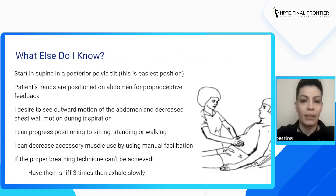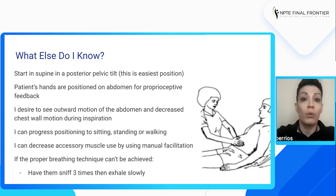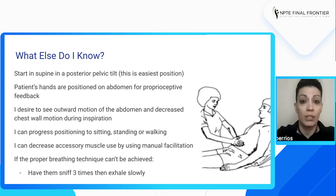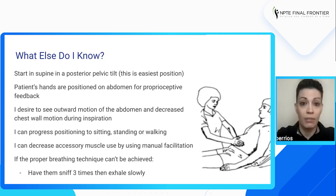Let's try to visualize what this technique is, because it's something you actually use and teach to people. We know that we start in supine, put the patient in a posterior pelvic tilt, and have them place their hands on their abdomen to increase proprioceptive feedback. We want to see outward motion of the abdominal wall and minimal chest wall motion during inspiration. We can progress positioning from supine to sitting to standing and then performing while walking. If the patient is using accessory muscles, we can use our hands as manual facilitation. If they're struggling, we can have them sniff three times and then exhale slowly until they perform the technique properly.